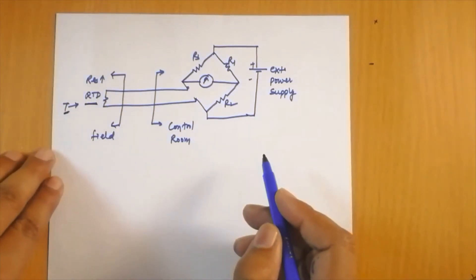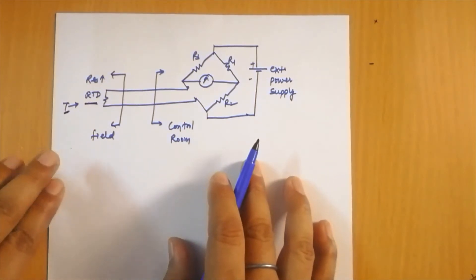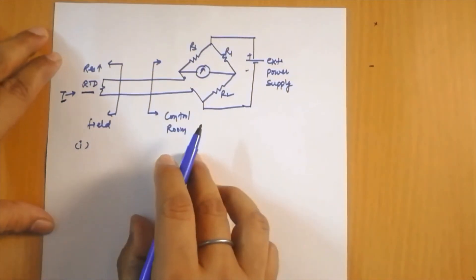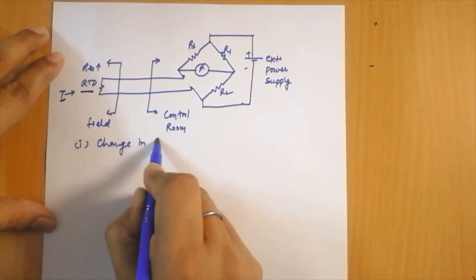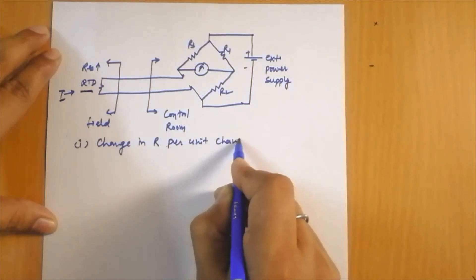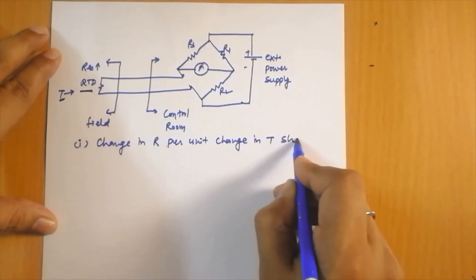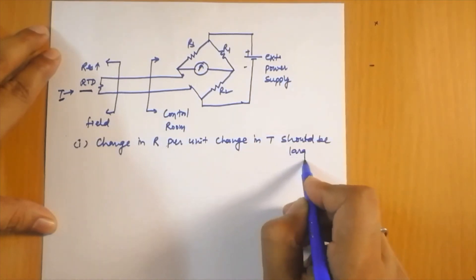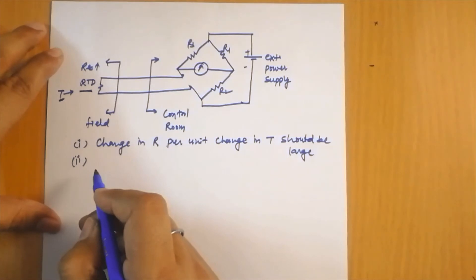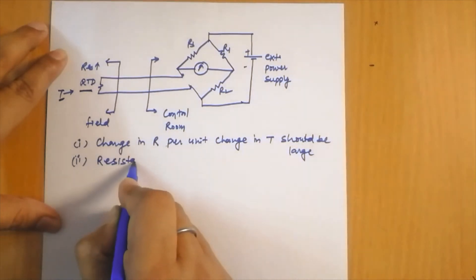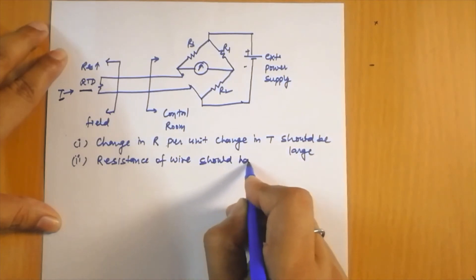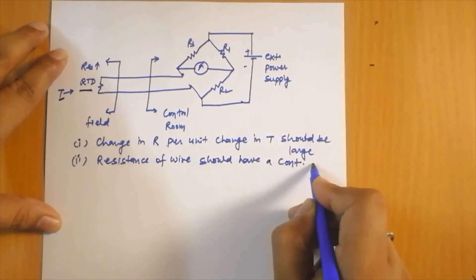The RTD should possess two characteristics. First, the change in resistance per unit change in temperature should be very large. Second, the resistance of the wire should have a continuous and stable relationship with temperature.